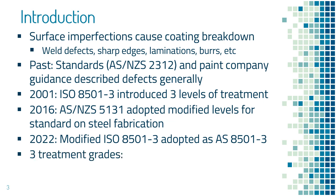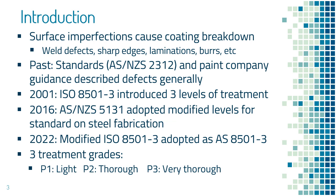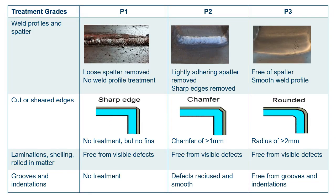The ISO standard was generally acceptable but had some weaknesses, so a modified version, AS 8501-3, was produced. Three levels of treatment from the ISO standard were adopted: P1 — light or limited treatment; P2 — thorough treatment; and P3 — very thorough treatment. The standard has 16 examples of such defects. For weld spatter, P1 requires only loose spatter to be removed, P2 requires lightly adhering spatter to be removed, and P3 requires the surface to be free of spatter.